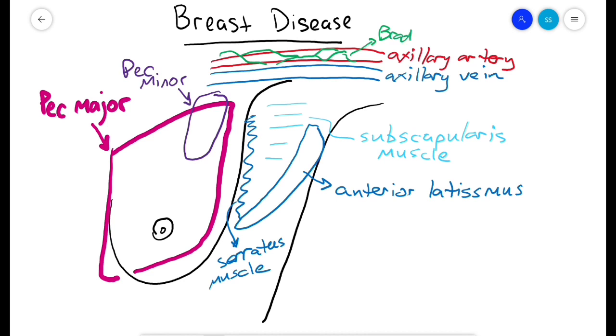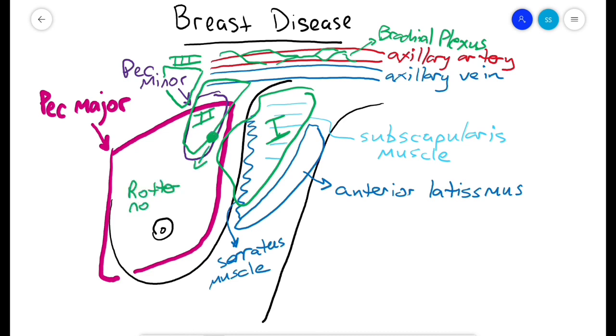The level one axillary nodes are lateral to the pec minor, level two are behind the pec minor, and level three are medial to the pec minor. Rotter's nodes are between the pec major and minor and are considered part of level two.